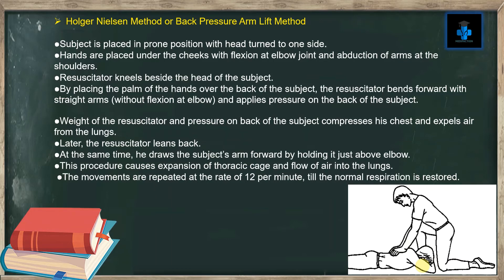By placing the palms of the hands over the back of the subject, the resuscitator bends forward with straight arms — that is, without flexion at the elbow — and applies pressure on the back of the subject. The weight of the resuscitator and pressure on the back compresses the chest and expels air from the lungs. The resuscitator then leans back, drawing the subject's arm forward by holding it just above the elbow. This causes expansion of the thoracic cage and flow of air into the lungs. The movements are repeated at a rate of 12 per minute until normal respiration is restored.